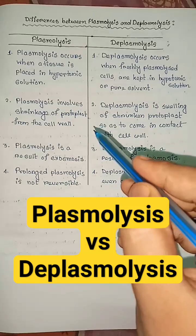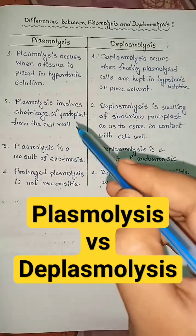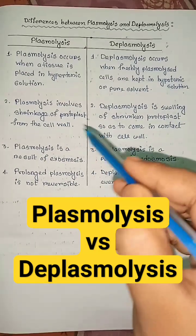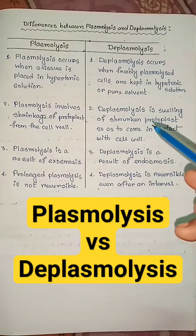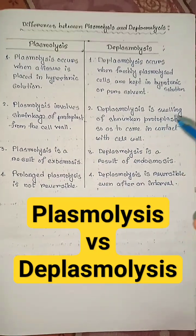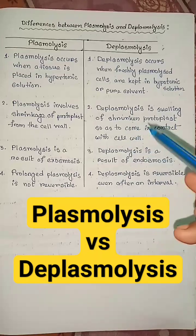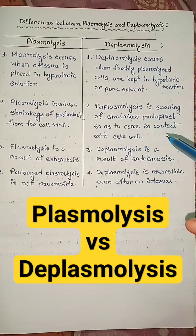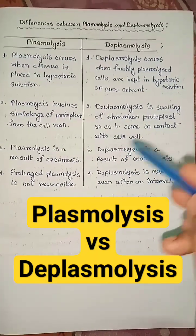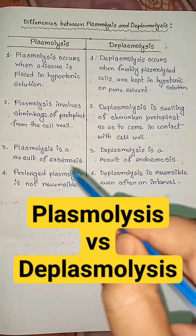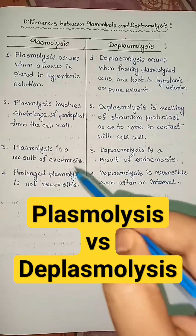Plasmolysis involves shrinkage of protoplast from the cell wall, but deplasmolysis is swelling of shrunken protoplast so as to come in contact with the cell wall.